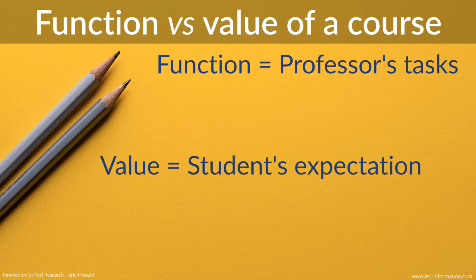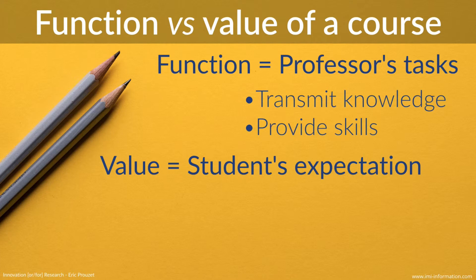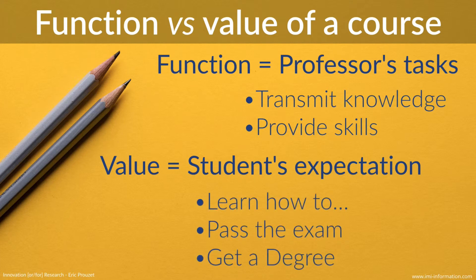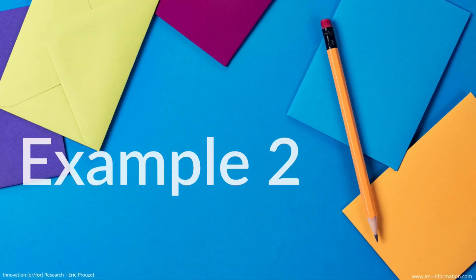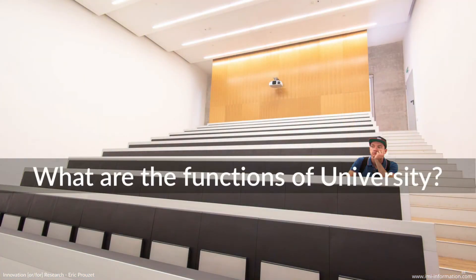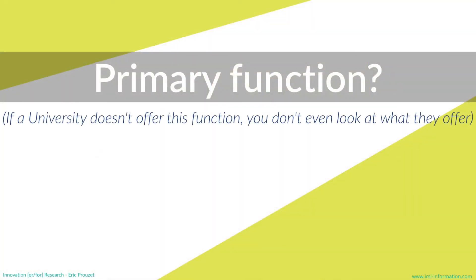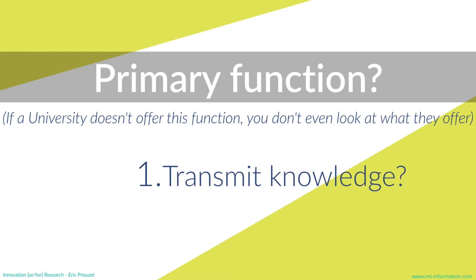On the other side, the value will be the student's expectation. The professor will try to create the course and build functions inside it — the functions of the course are to transmit knowledge and provide skills. What will be the value the student expects from this course? Is it to learn how to do something, just to pass an exam, to get a degree? We see a difference between the reason why the professor creates the course and the reason why the student attends it. Let's expand with another example: what are the primary functions of a university?